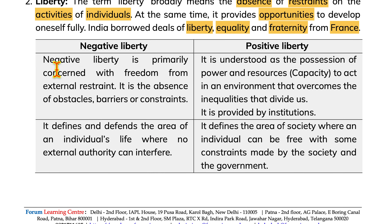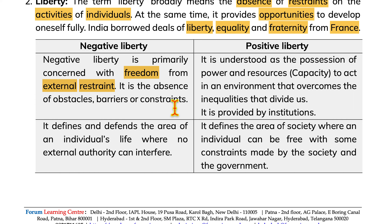Negative liberty is primarily concerned with freedom from external restraint. It is the absence of obstacles, barriers or constraints. Positive liberty is understood as the possession of power and resources to act in an environment that overcomes the inequality that divides us. It is provided by institutions.